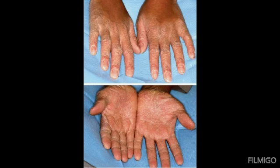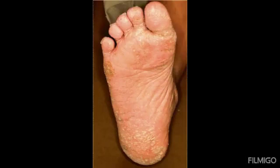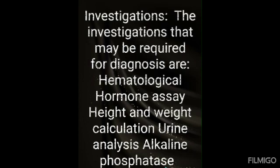This picture shows hyperkeratotic lesions on the palms and the dorsal surface of the hand — both the palm and dorsal surface are hyperkeratotic. This picture shows the hyperkeratotic lesions on the soles. These are the skin manifestations of Papillon-Lefèvre syndrome.